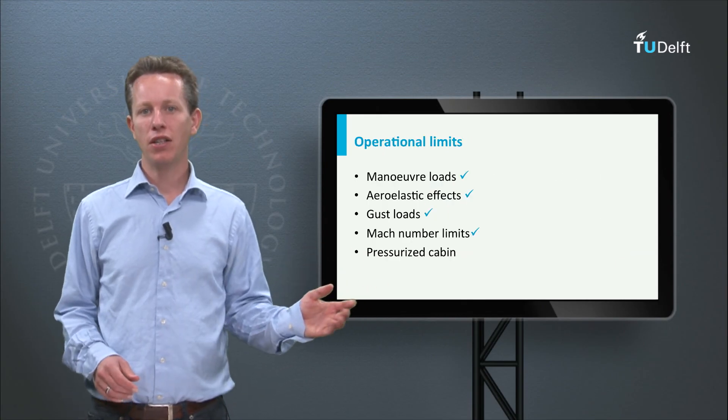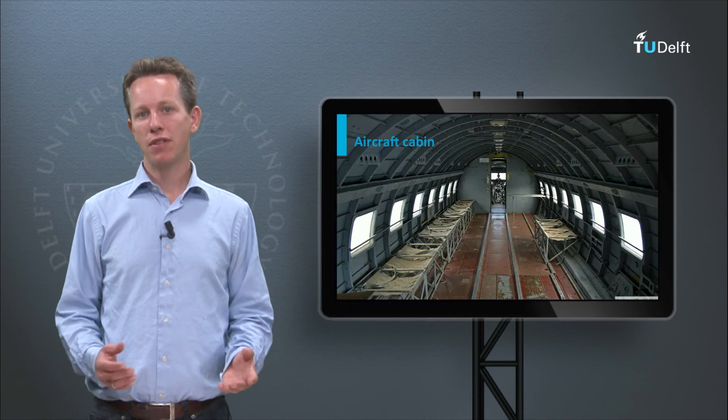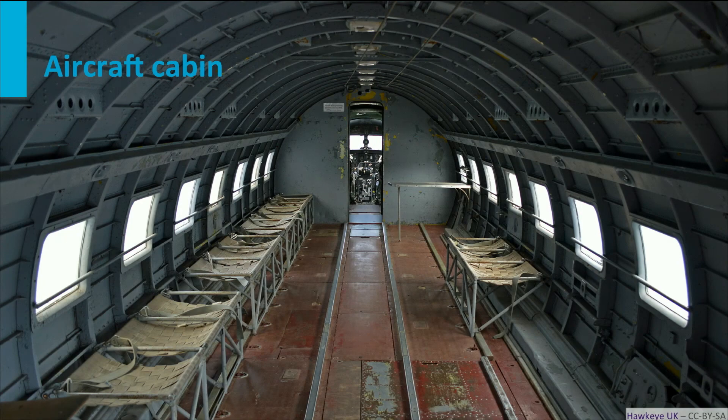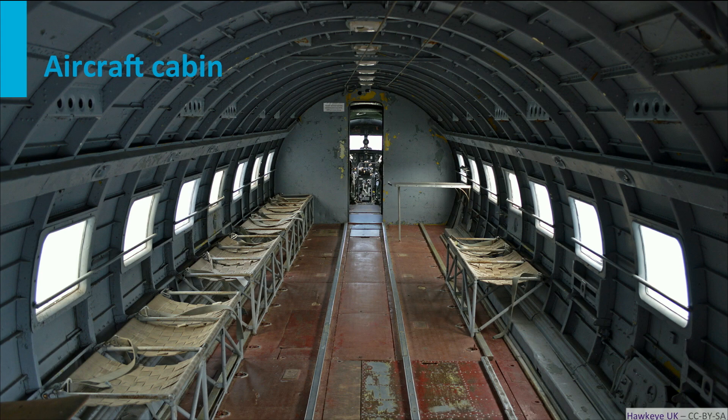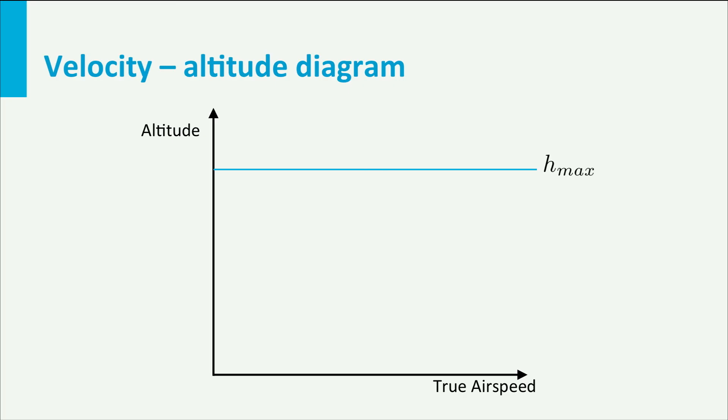Now let's have a look at the final operational limit, the limits associated to the pressurized cabin. Commercial aircraft typically fly at about 10 km altitude. In order to create a nice environment in the aircraft for the passengers, the cabin is pressurized. The difference between the internal pressure and the external pressure on the aircraft creates stresses in the fuselage structure. The fuselage structure is designed for a maximum pressure differential. So, there is a maximum flight altitude at which the aircraft is allowed to fly before the pressure differential becomes too large. This limit can also be drawn in the velocity altitude diagram. It is simply a straight horizontal line indicating the maximum flight altitude.